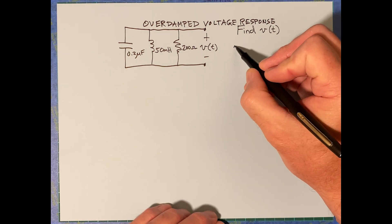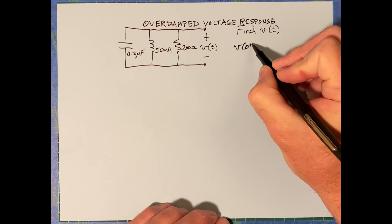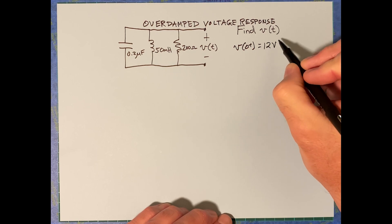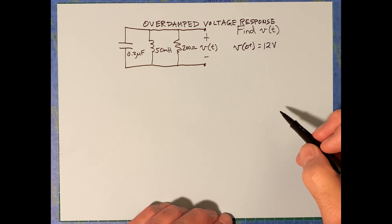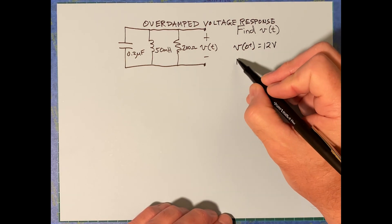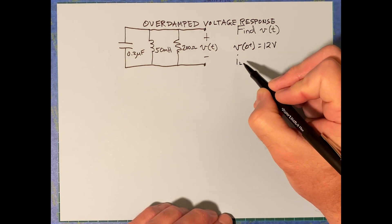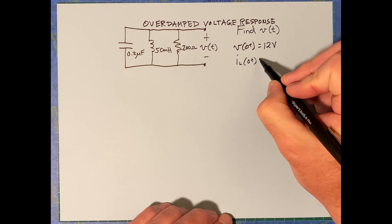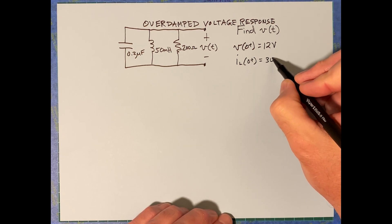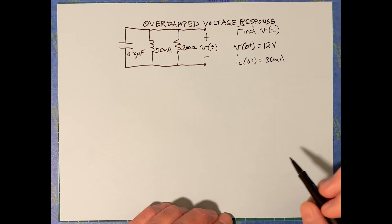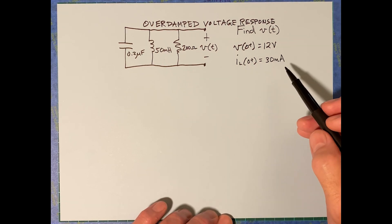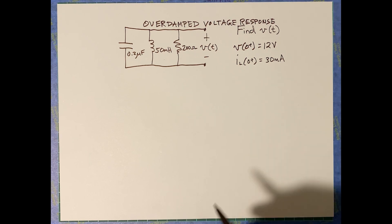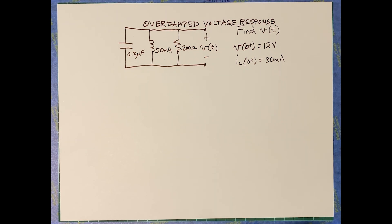We need a little extra information. The voltage at zero-plus is equal to 12 volts, and the current through the inductor at zero-plus is 30 milliamps. Based upon this, we know the form of the solution, but we should check that alpha and omega fall into the right category for overdamped.